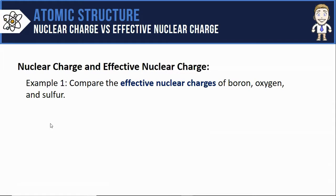So let's close the video with an example where we compare the effective nuclear charges of three atoms, boron, oxygen, and sulfur. The first step is going to be to write the electron configuration of each one. Here's boron, oxygen, and sulfur.